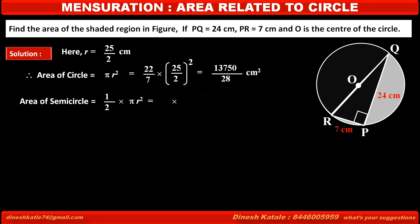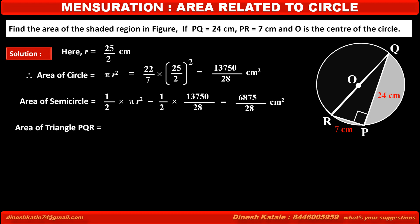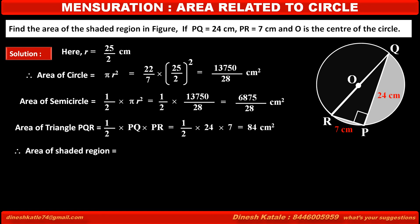The area of the semicircle is half the area of the circle, which is 13750/28 ÷ 2 = 6875/28 cm². The area of triangle QPR = (1/2) × base PQ × height PR = (1/2) × 24 × 7 = 84 cm². So the area of the shaded region = area of circle − area of semicircle − area of triangle QPR.